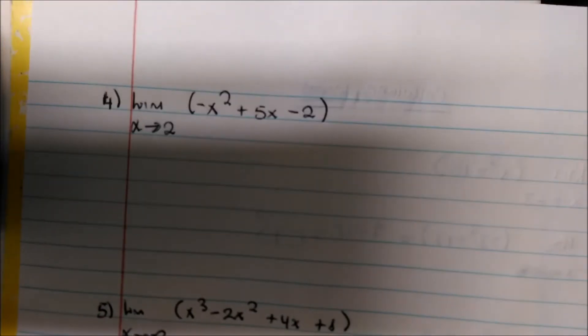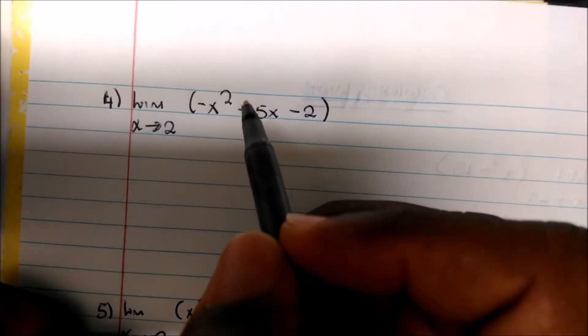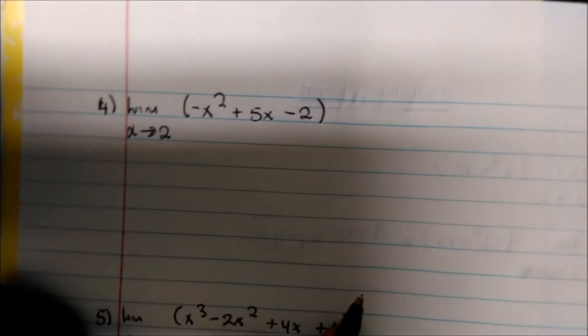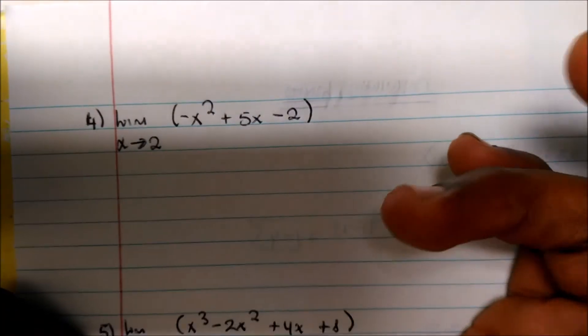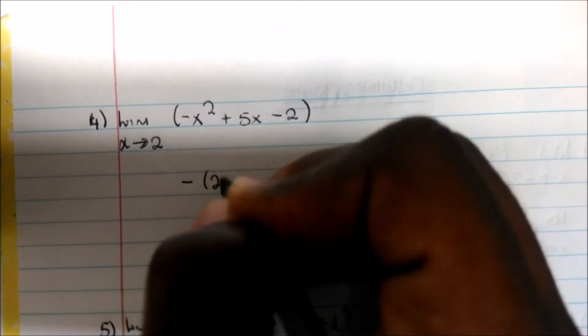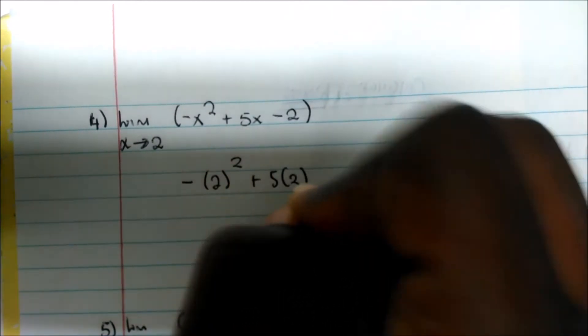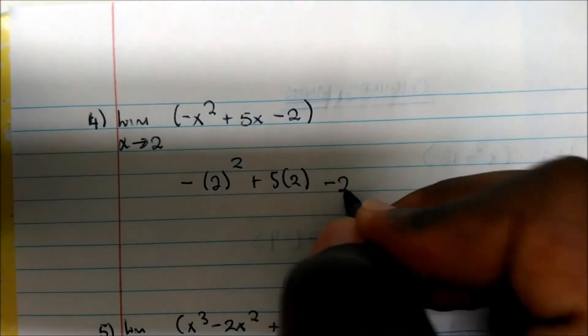Let's look at another one. The limit as x approaches 2 of this polynomial function here. Again, we can just plug in a value and see what's really going on. So negative 2 squared plus 5 times 2 minus 2.